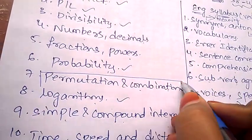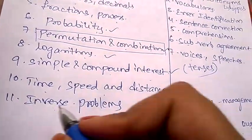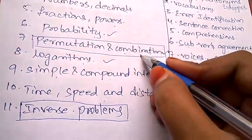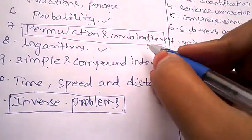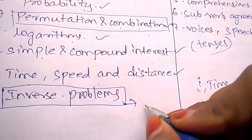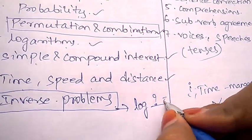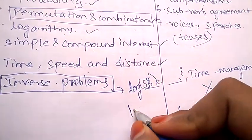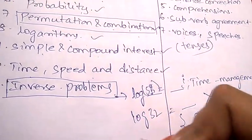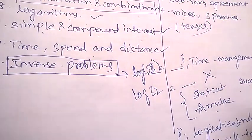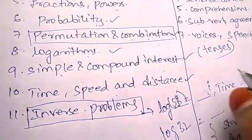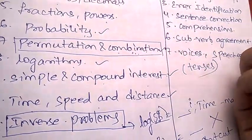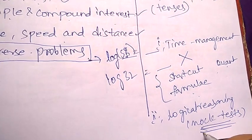Coming to permutations and combinations and inverse problems, time will not be sufficient for both. In inverse problems they'll be asking like log of some number - log of 56 is how much, or log of 32 is how much. These all sorts of things are not so easy to remember, so there will be some shortcuts and formulas. Follow this. For permutations and combinations also, the questions will be little confusing. That's why make sure you prepare more and more mock tests.